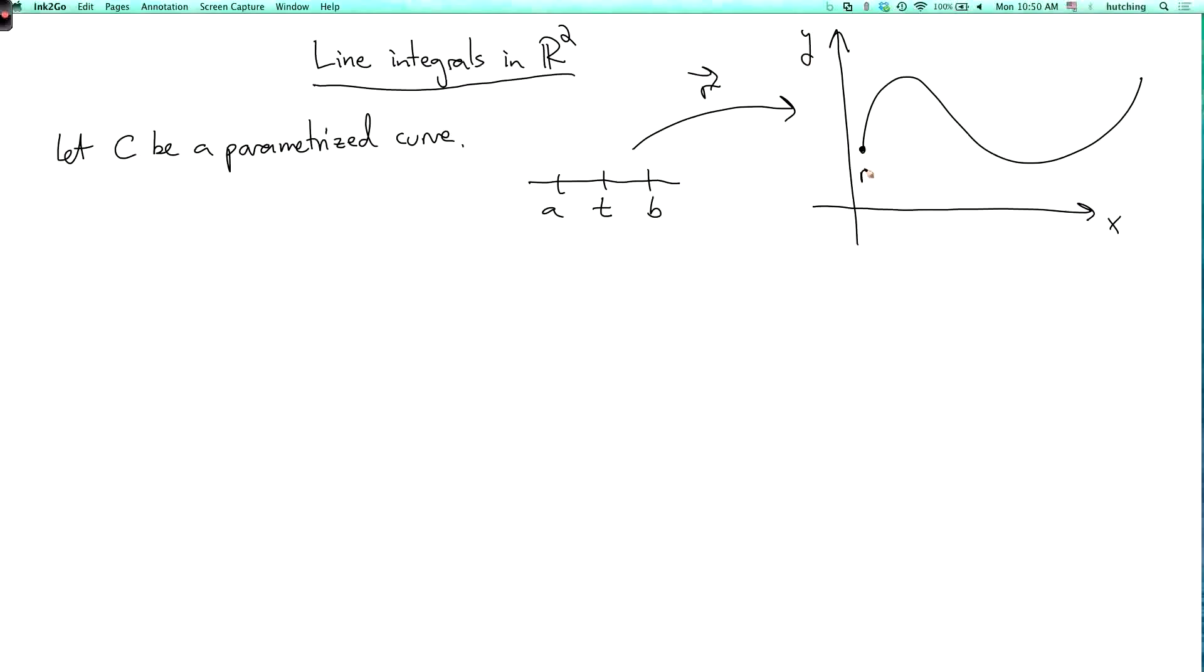So say this is r of a, and this is r of b, and some point on this curve here, this will be r of t, which is the point x of t comma y of t. Now think of it as a vector.